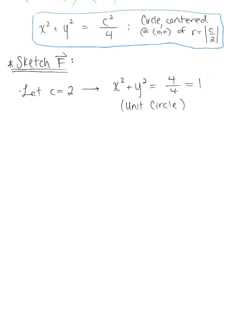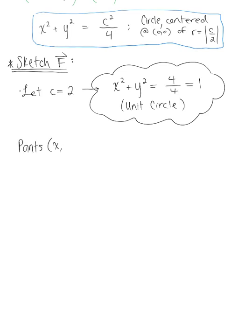We're going to use this level curve, select points on it, and determine what the vectors at those points look like. So we create a table of values with points x, y that sit on the unit circle. Using the x and y intercepts to start, we have: (1, 0), (0, 1), (−1, 0), and (0, −1). We use these points to find vectors on the level curve.